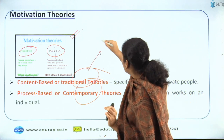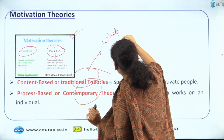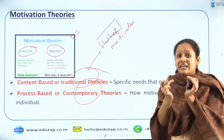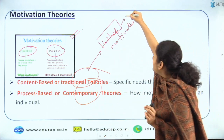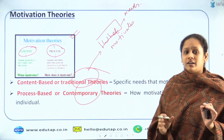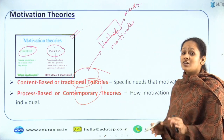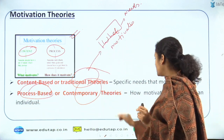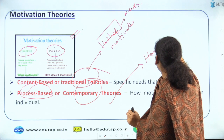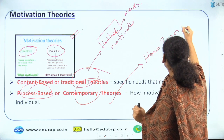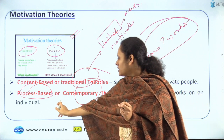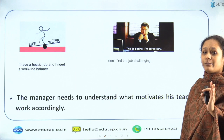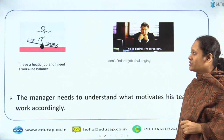Content theory of motivation tells you what motivates an individual — the needs which motivate. This is what content or traditional theory of motivation is. Process-based theory, on the other hand, tells how motivation works on an individual. Today we will be understanding a very important content-based theory: Maslow's theory.